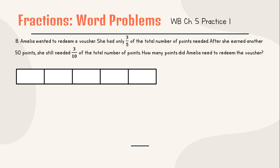Number 8: Emilia wanted to redeem a voucher. She had only 3/5 of the total number of points needed. After she earned another 50 points, she still needed 3/10 of the total number of points. How many points did Emilia need to redeem the voucher? As we can see, she had only 3/5, so that's why I have 5 boxes. After she earned another 50 points, do we know how many boxes for 50 points? We do not know, so skip it and go to the next information.